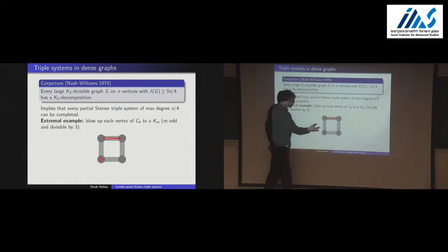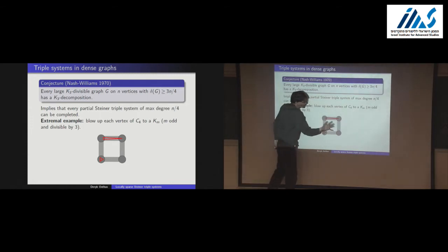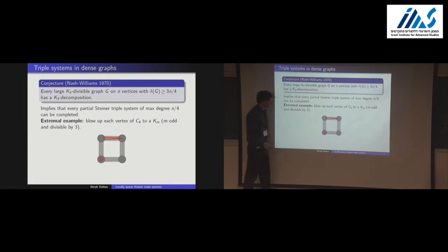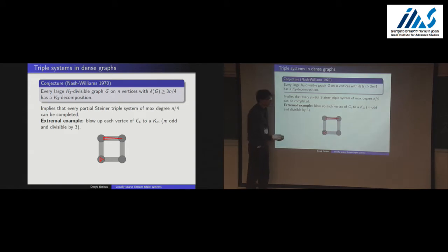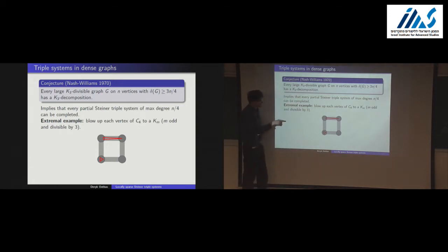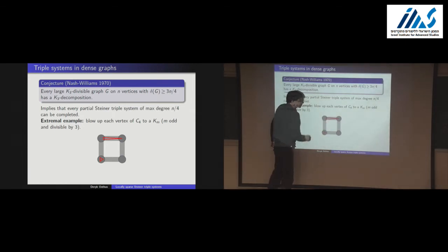The conjecture is formulated in the complement: if you have a large triangle-divisible graph with minimum degree at least 3N/4, then it has a triangle decomposition. This is tight because of the extremal example of a blow-up of a 4-cycle — four cliques and four complete bipartite graphs — where every triangle has at least one edge inside a clique. Fewer than a third of the edges lie inside the cliques, so you can never cover all the outside edges with triangles.